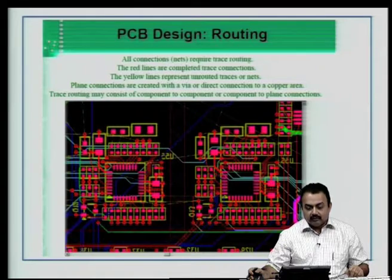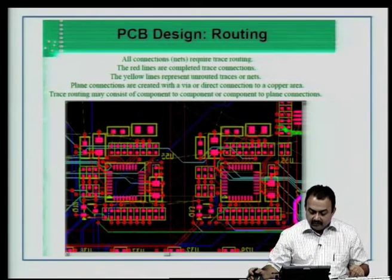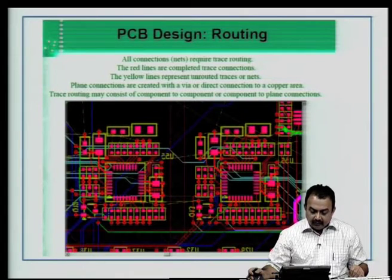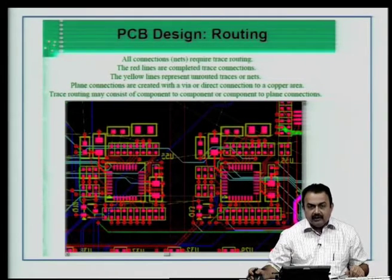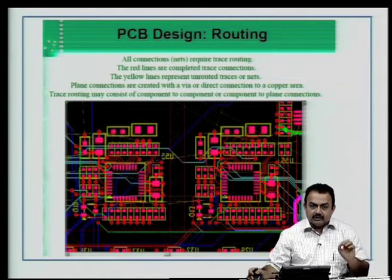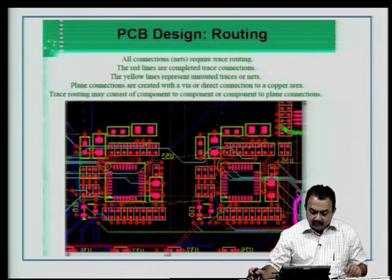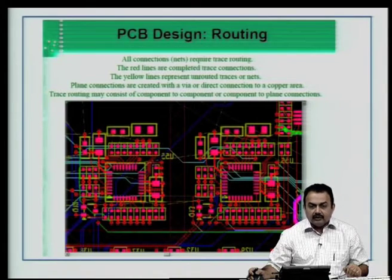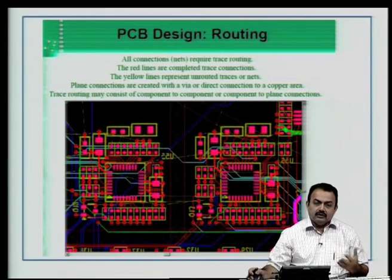Then we go to the routing program. Utilize the routing efficiency of your CAD program to interconnect the components based on the net list information. All connections or nets require trace routing. The red lines in the figure are completed trace connections; the yellow lines represent unrouted or incomplete traces or nets. Plain connections are created with a via or direct connection to a copper area for ground and so on. Trace routing may consist of component-to-component or component-to-plane connections. Unrouted nets can be completed manually or by modifying placement and design rules.